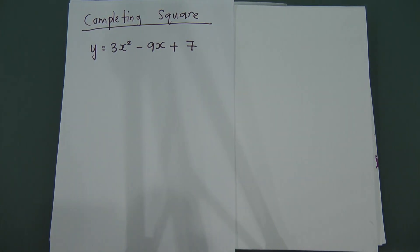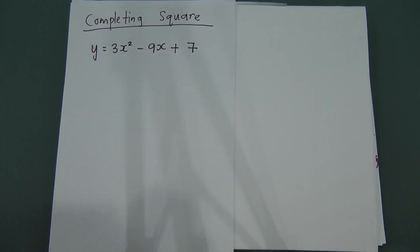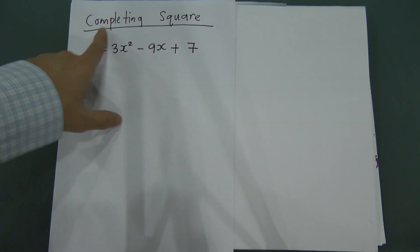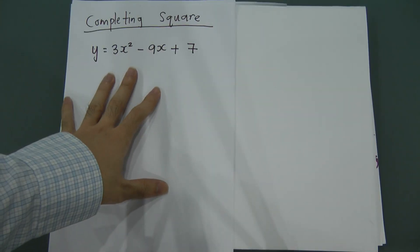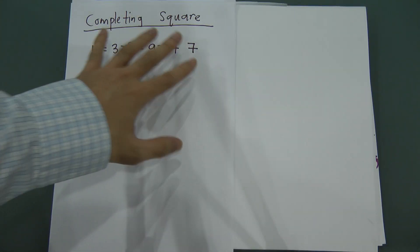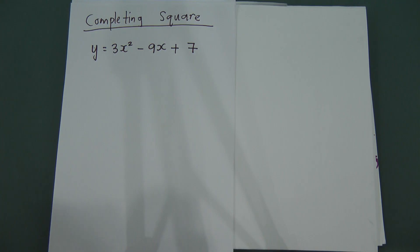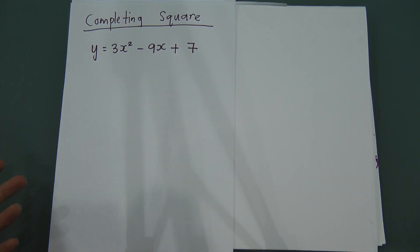Today I'm going to teach you the completing square method for the chapter on quadratic functions. This method is very important in this chapter because completing the square can help you find the minimum point or maximum point.